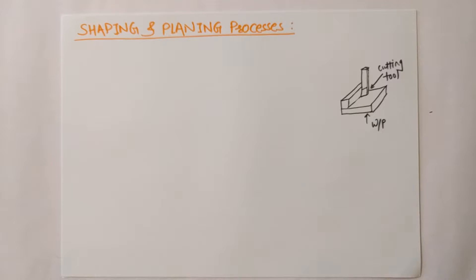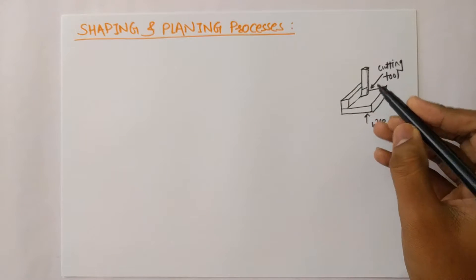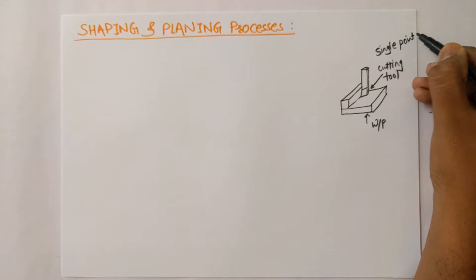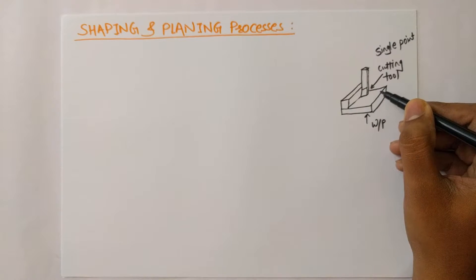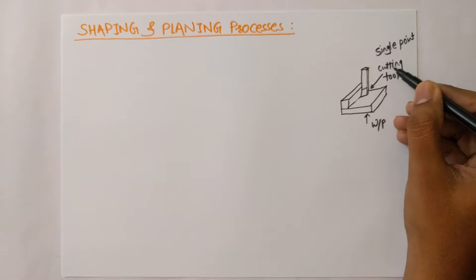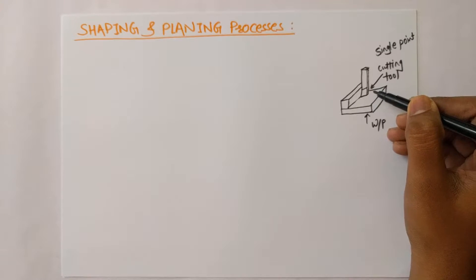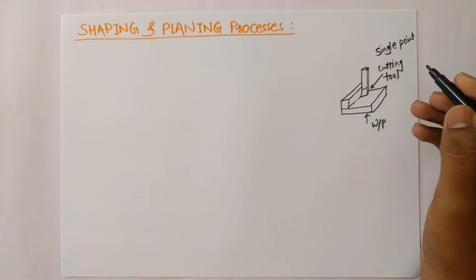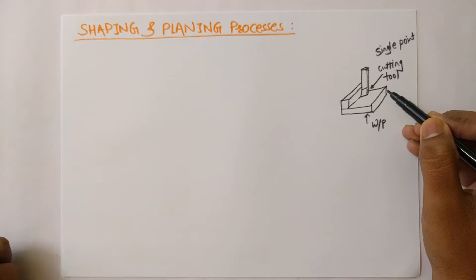Welcome to Knowledge Ninja Academy. Today we are going to see shaping and planing processes. In both of these processes, one single point cutting tool is used for removing the material from the workpiece in a planar manner. The tool moves in the horizontal direction, and as it moves through the workpiece, the workpiece material is taken out. So what is shaping and what is planing? Both of these processes are similar but have one key difference.